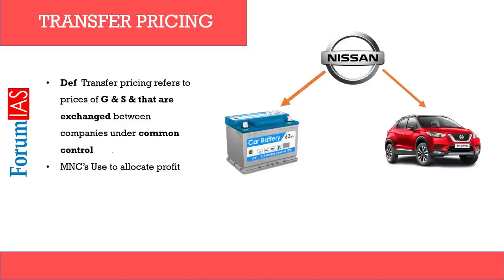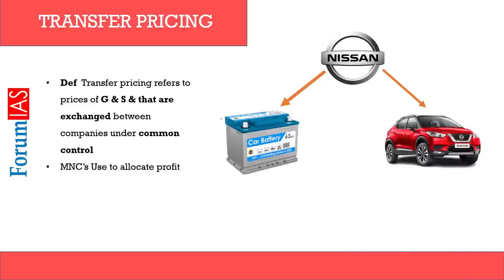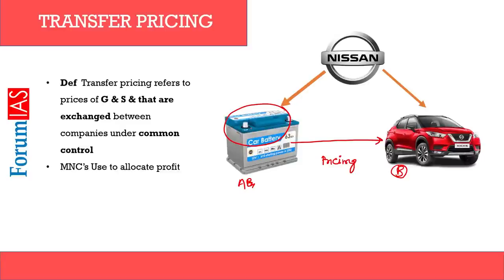Transfer pricing refers to the pricing of goods and services when they are being transferred from one entity to another where the two entities are related. Imagine company A and company B — when you transfer goods and services from A to B, the pricing mechanism you use is called transfer pricing. For example, one company makes a battery and the other assembles a car. When the battery is transferred to the other company, the pricing mechanism used for that battery is called transfer pricing.